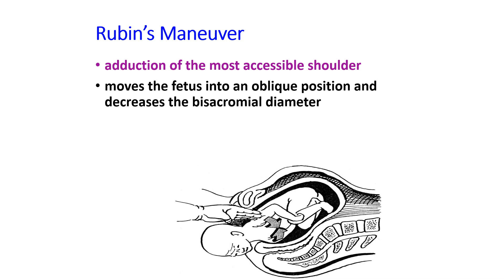In Ruben's maneuver, one hand is inserted into the vagina to palpate the posterior shoulder, specifically the back side of the shoulder. The hand is used to abduct the shoulder. This brings the shoulder from the anteroposterior or transverse diameter into the oblique diameter, and also decreases the biacromial diameter — both of which help release the shoulder.